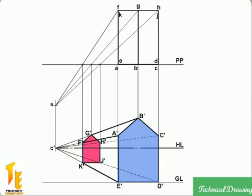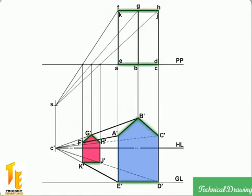Note that vertical lines AE, CD, etc. remain vertical in perspective. Similarly, horizontal lines ED and KJ, and sloping lines AB, BC, FG, and GH, which are all parallel to the picture plane, remain respectively horizontal and sloping in perspective.